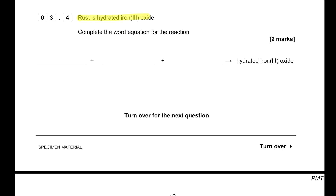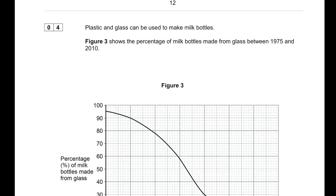Rust is hydrated iron(III) oxide. Completing the word equation: when iron reacts with oxygen in the presence of water, it produces hydrated iron(III) oxide.